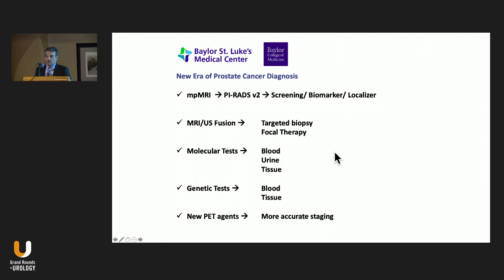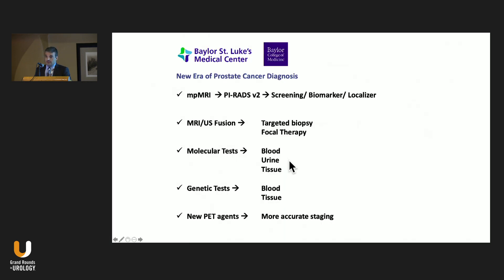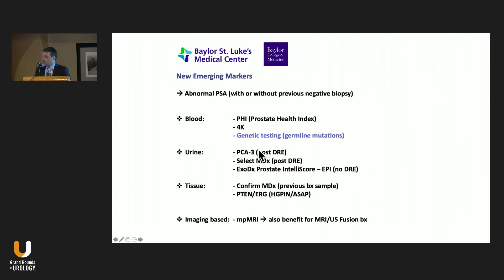Now we have a whole new menu of interesting things we can use. MRI with the PI-RADS classification has roles in terms of screening, biomarker, localizer, and it can combine with biopsy for targeting and even focal therapy. Molecular tests can be done on blood, urine, and tissue. We have genetic tests mostly in blood for this indication, and also new PET agents for accurate staging.